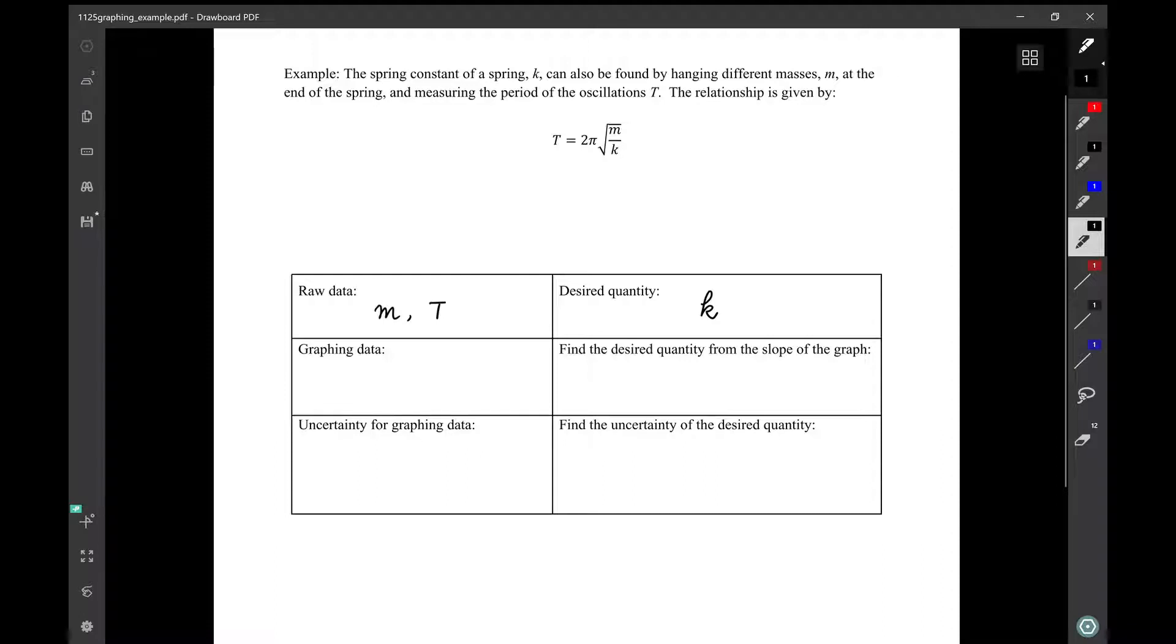So the trick we are going to do is we are going to force the graph to be linear by plotting on the y-axis T and on the x-axis square root of m. This way we will get a straight line because T is proportional to the square root of m. So our y will be T and our x will be the square root of m.